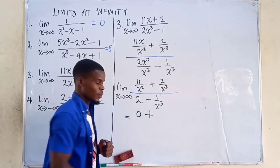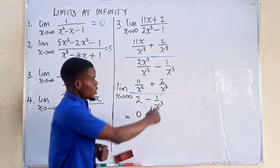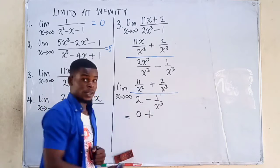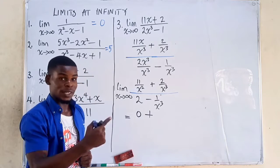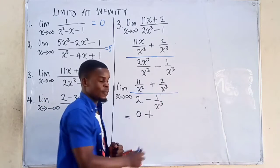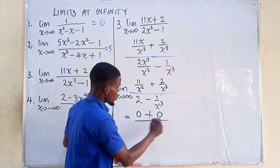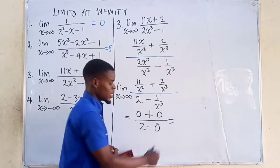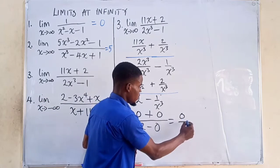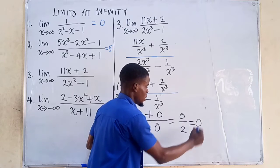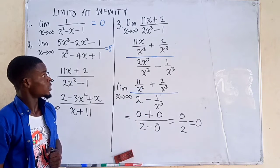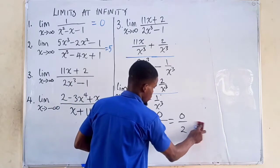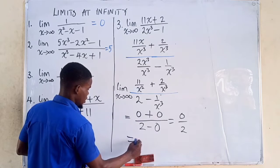We add that with 2 divided by x³ — as x tends to infinity, x³ tends to infinity, so 2 divided by infinity is also 0. In the denominator, we have 2 minus 0, which is just 2. So in the end, we have 0 divided by 2, and the result is 0. That is the limit of the third question.